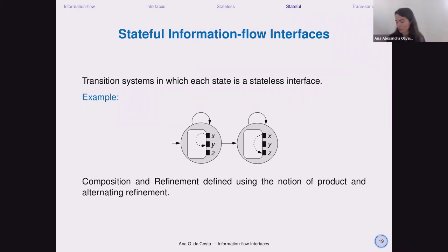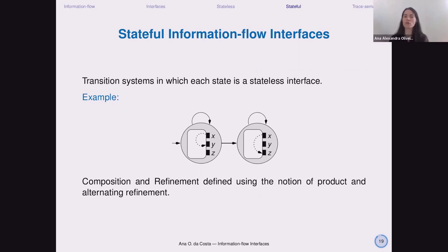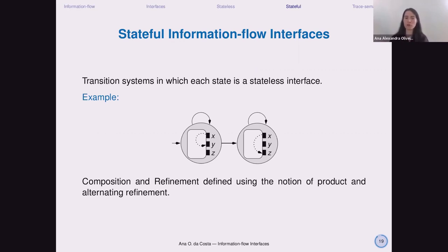Another thing introduced in the paper are stateful information flow interfaces. These interfaces allow the specification to change over time. For example, X cannot flow to Y until X cannot flow to Z. We have transition systems where in each state we have a stateless interface. Composition and refinements are then defined using the notion of product and alternating refinements. The stateless case was the most difficult part; from there we applied standard operators for composition and refinements for the stateful case.